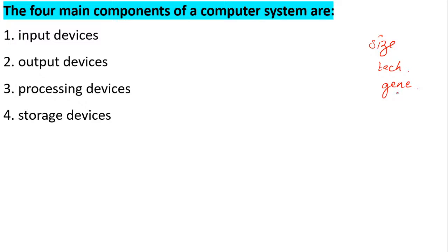Now we are going to study what are the main components of a computer — what is there inside a computer. There are four basic components of a computer: input device, output device, processing device, and storage devices.